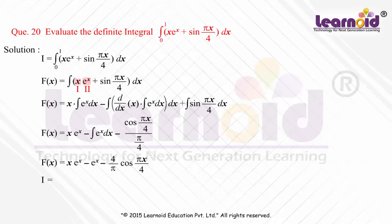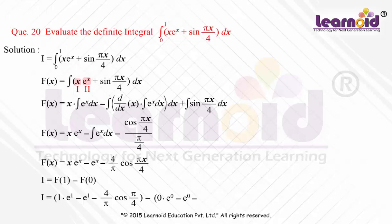Now i equals f(1) minus f(0). i equals 1·e^1 minus e^1 minus (4/π)·cos(π/4), minus the quantity 0·e^0 minus e^0 minus (4/π)·cos(0).